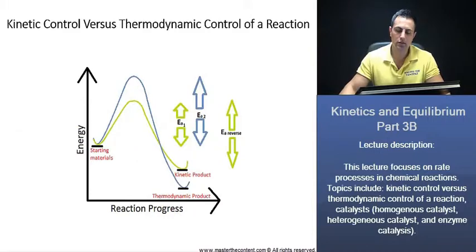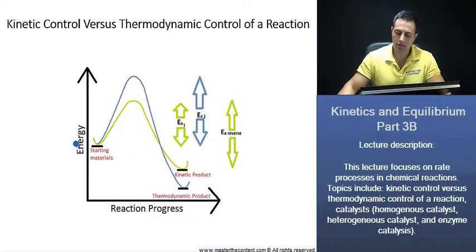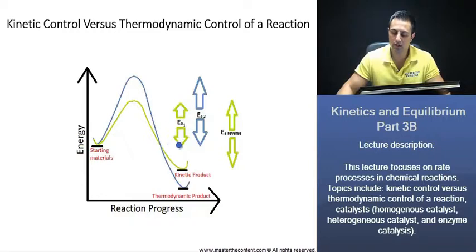Now let's talk about kinetic control versus thermodynamic control of our reaction. Any reaction can take more than one pathway to get more than one product. For example, let's say our starting materials here can give us a kinetic product and a thermodynamic product. The kinetic product is always going to be the faster one, and it's the one with the lower activation energy.